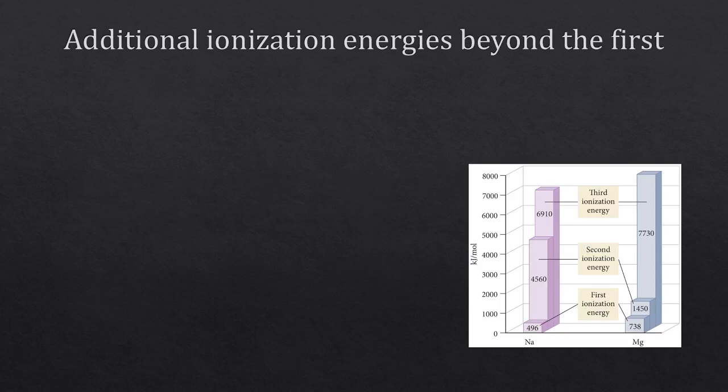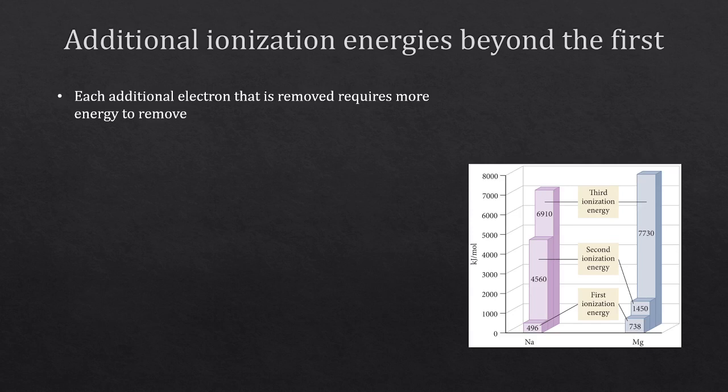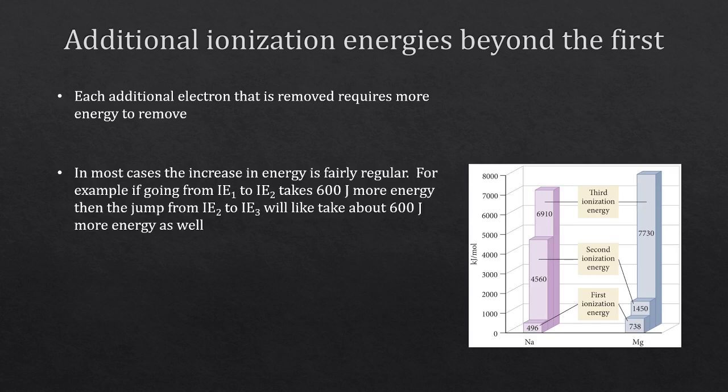What about ionization energies beyond the first one? Each additional electron removed always requires more energy — you'll never find a case where removing the ninth electron is easier than the eighth. In most cases the increase is fairly regular: if going from IE1 to IE2 takes 600 joules more, then IE2 to IE3 will also take roughly 600 more — maybe 640 or 660, but a fairly steady pattern.